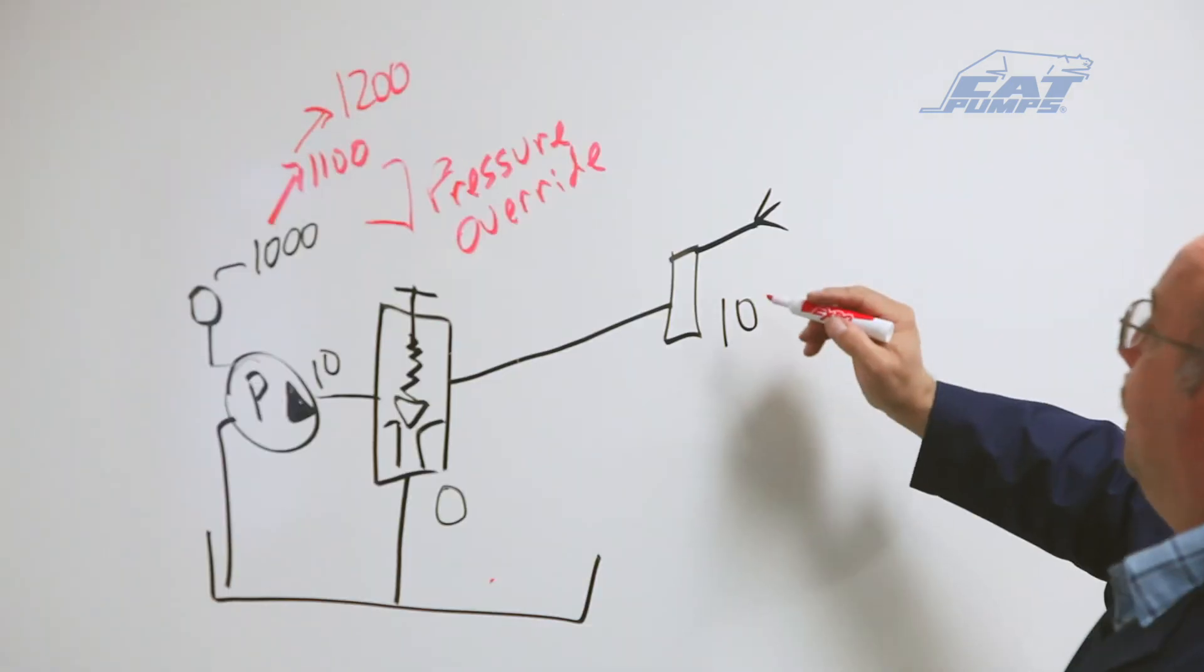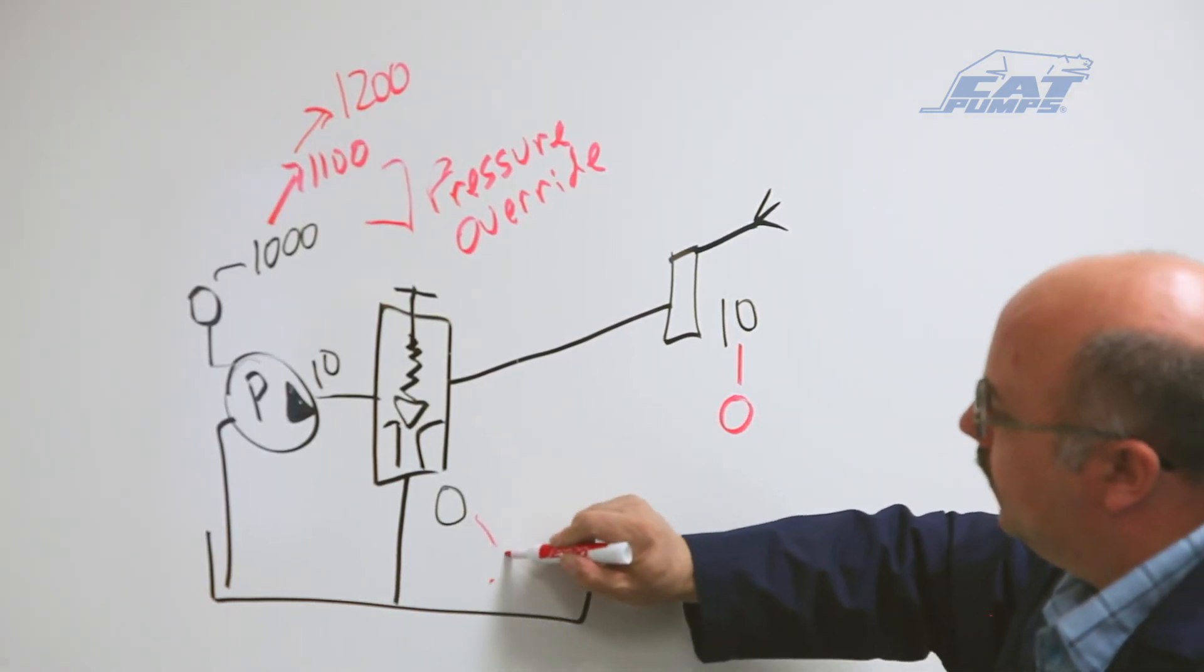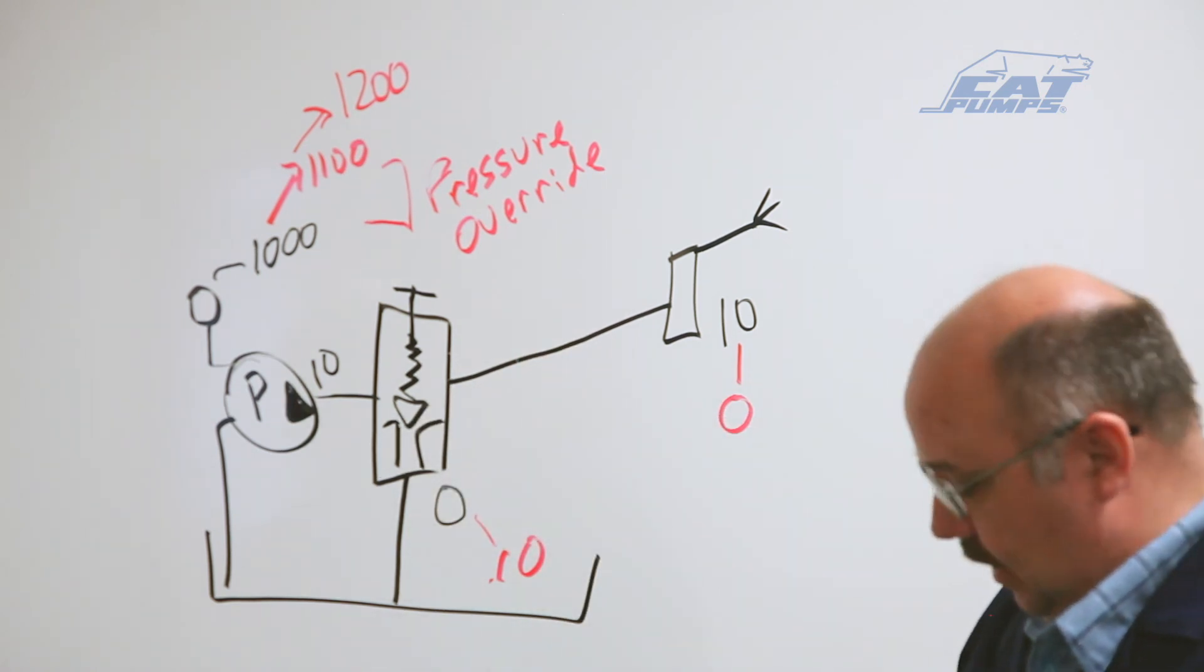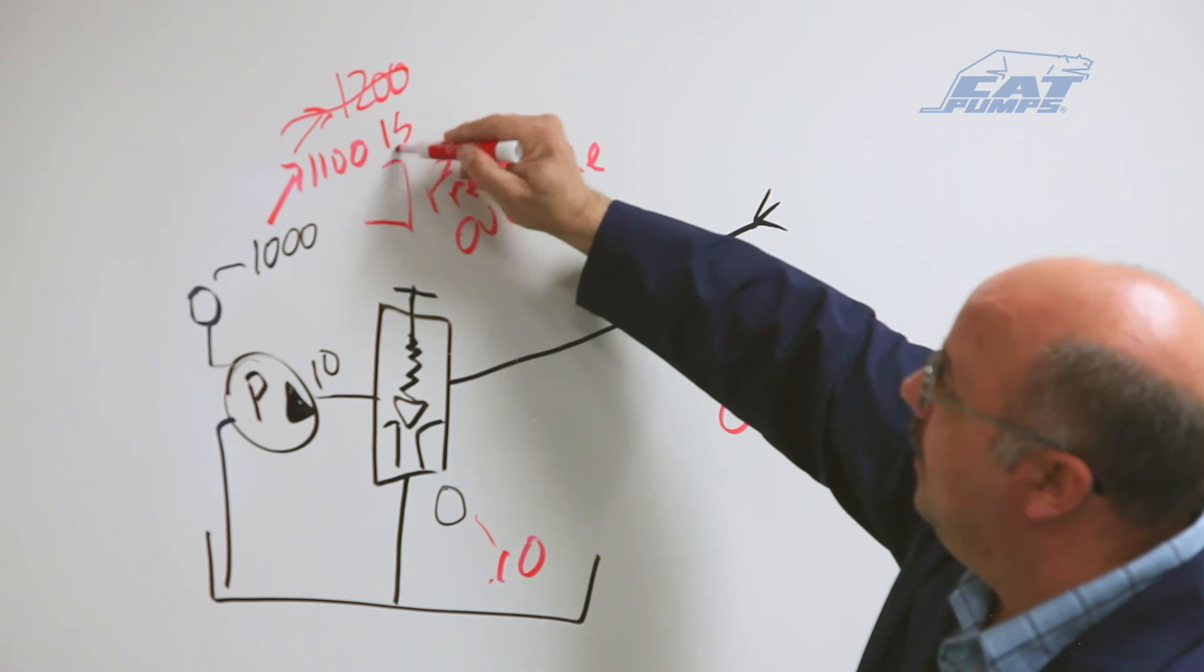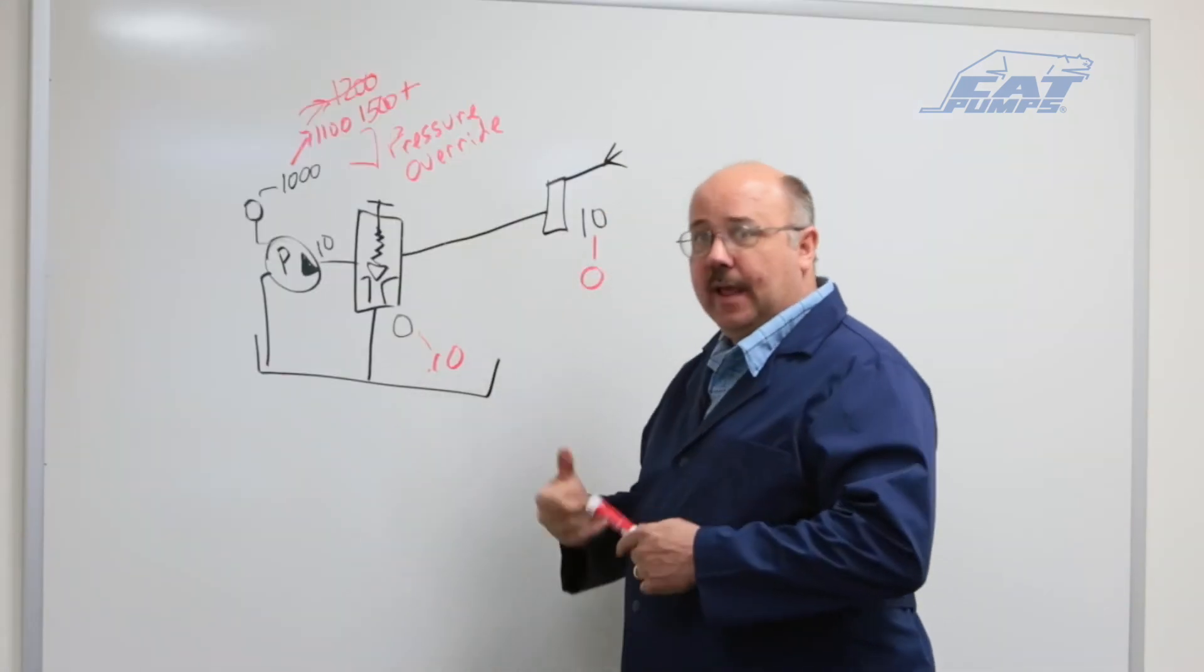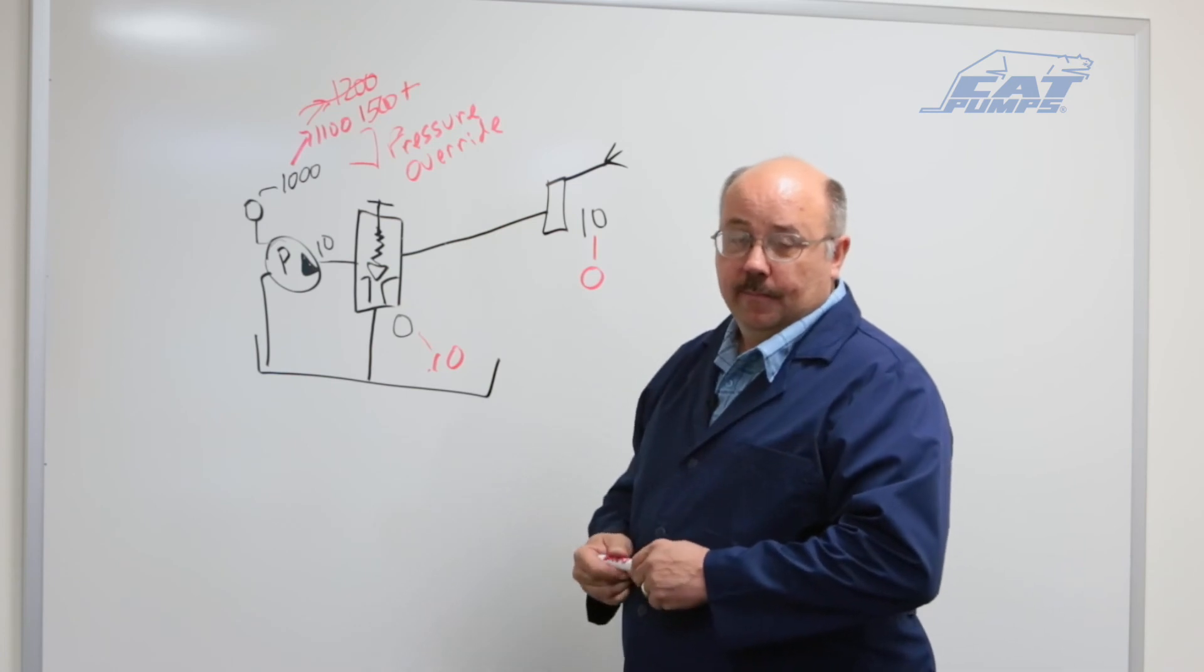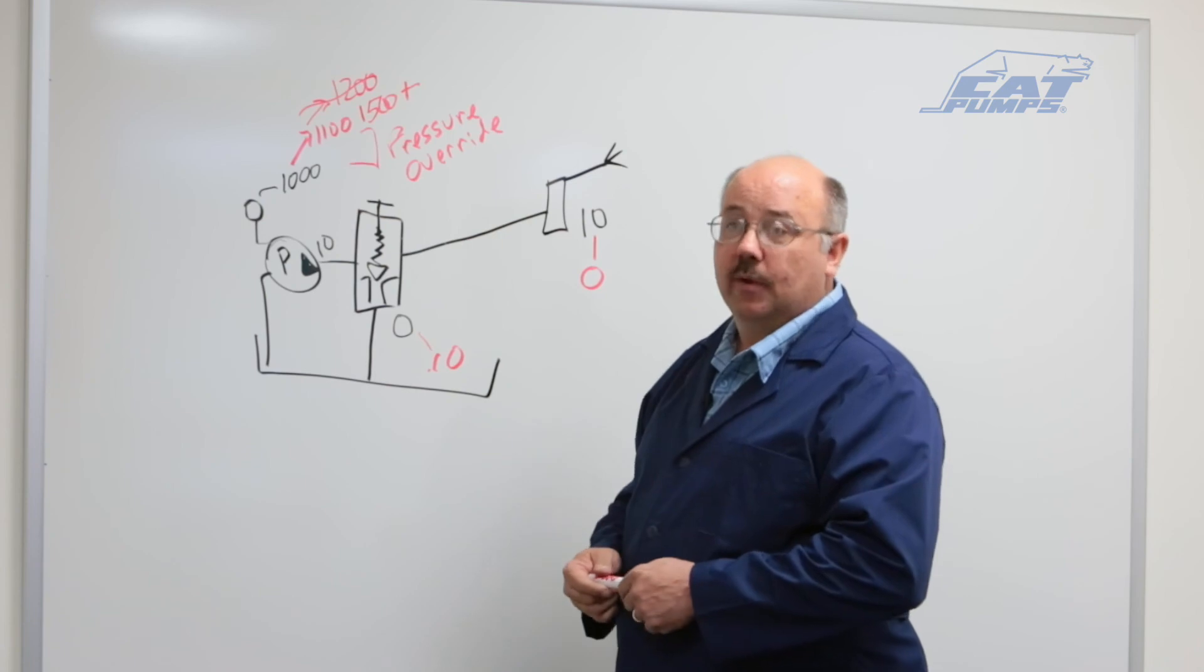But as soon as the gun does close, this has to go to zero, this has to go to 10, and now if I've adjusted this quite a bit because this was closed off, I could actually see this going not to 1200 but maybe to 1500 or higher. And that's why it's important to have a little bit of bypass while you're operating the system so that you don't over-adjust your pressure regulator. And that's why it's important to be aware of what pressure override is and what it can do.